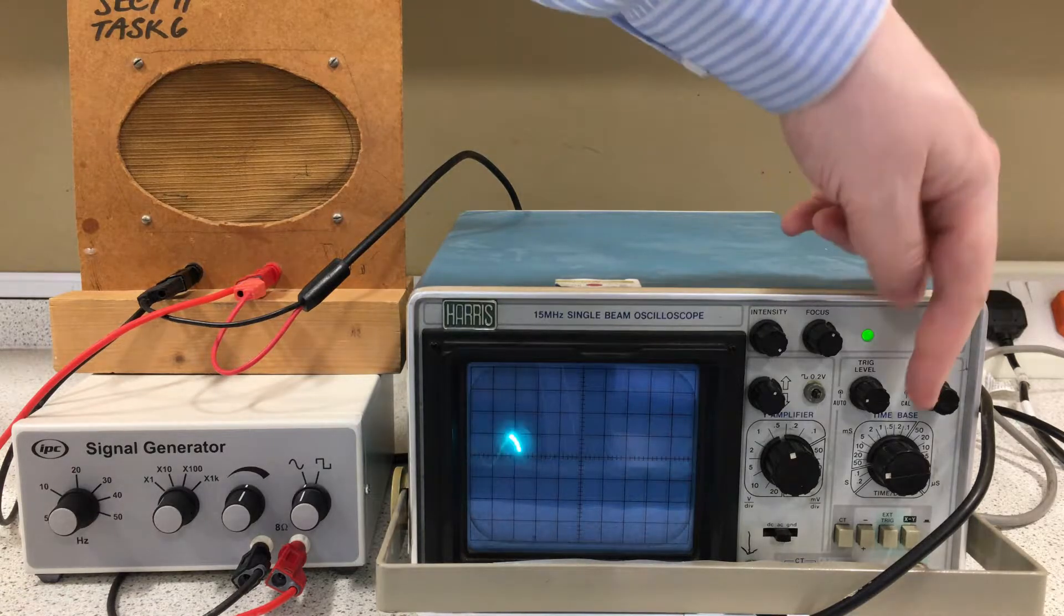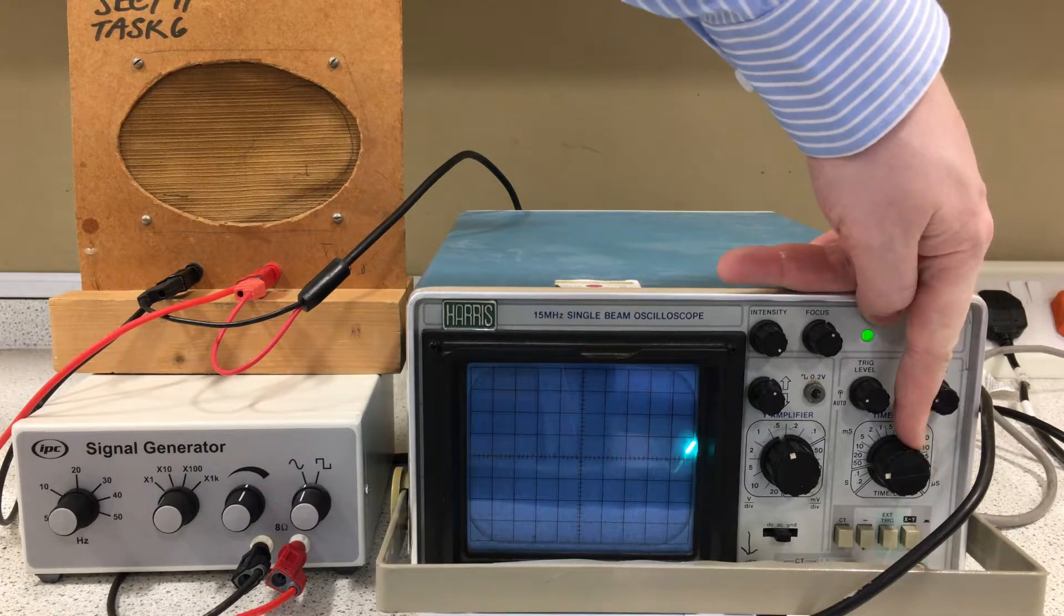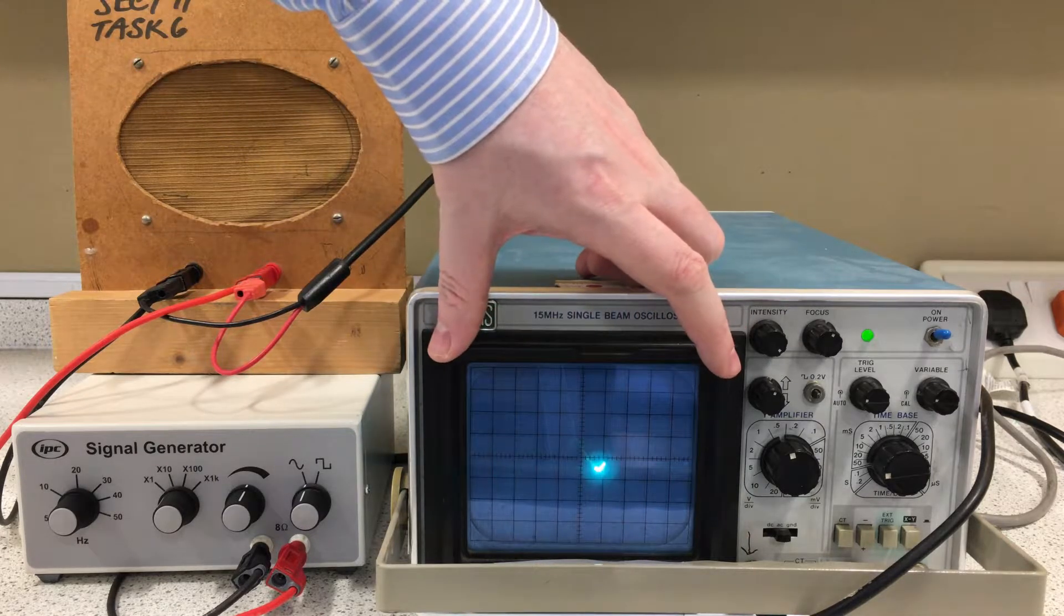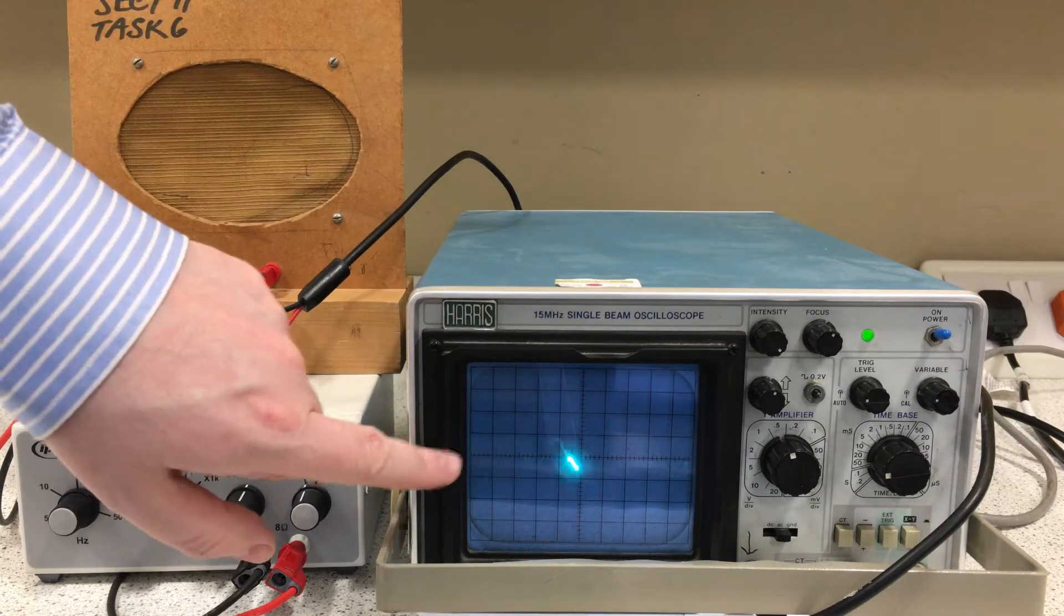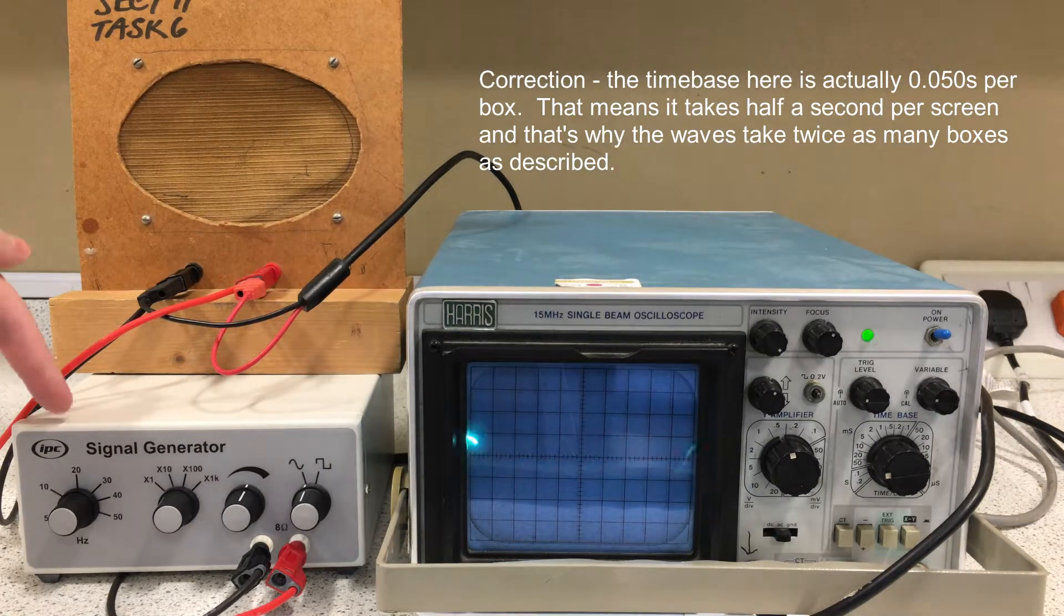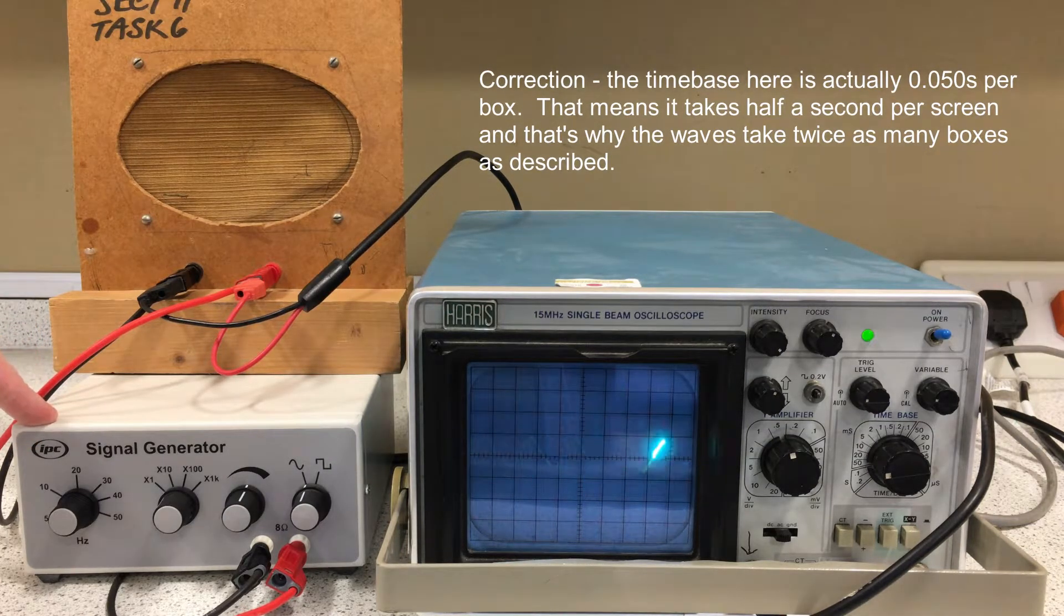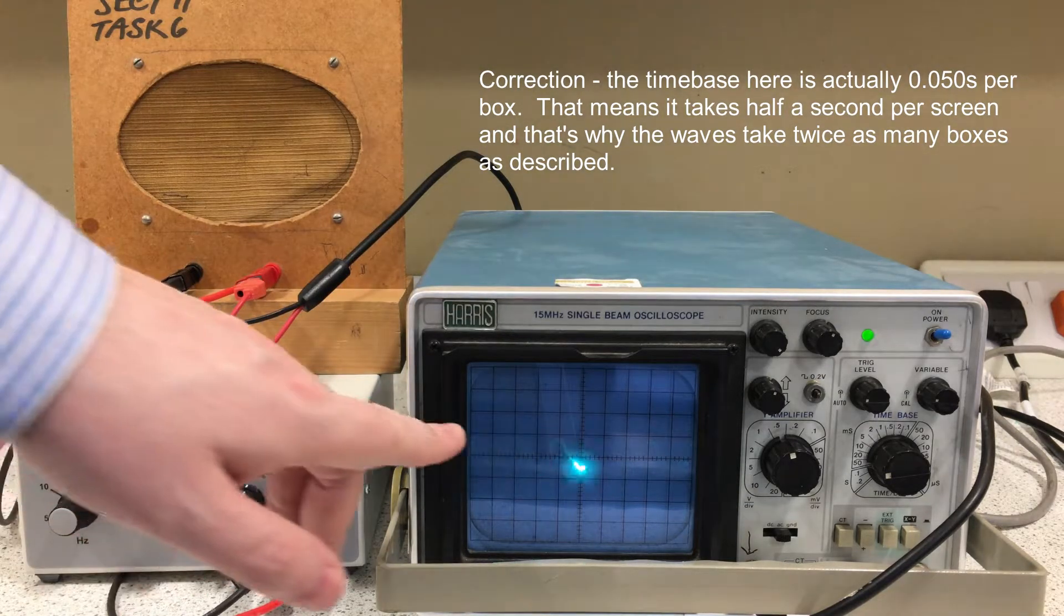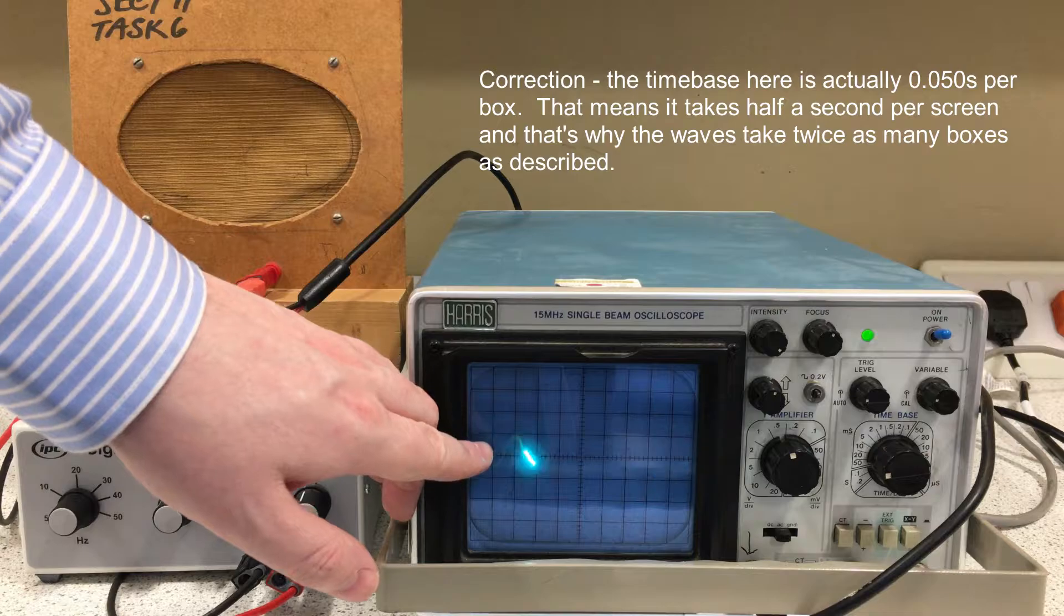This signal generator has a time-based setting of 0.1 seconds per box, so it takes one second for the beam to pass across the screen. The signal generator is currently set to produce a 10 Hz signal. That means 10 wobbles every second, or essentially one wobble per box.